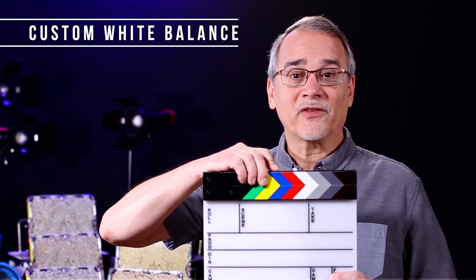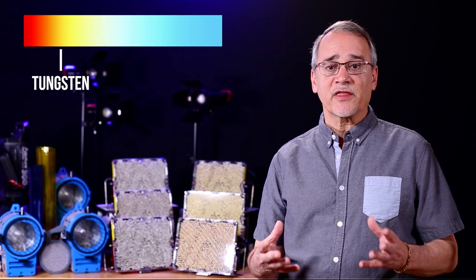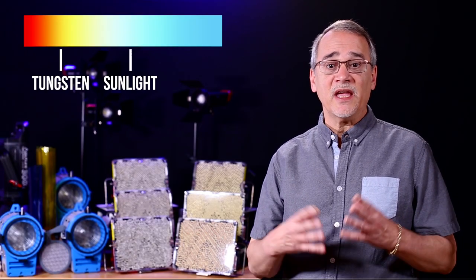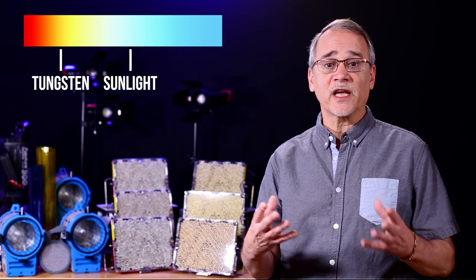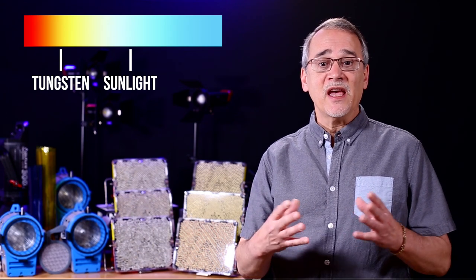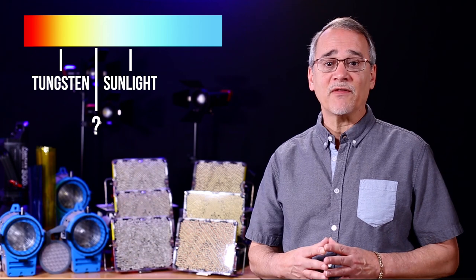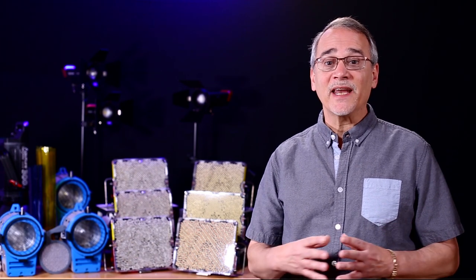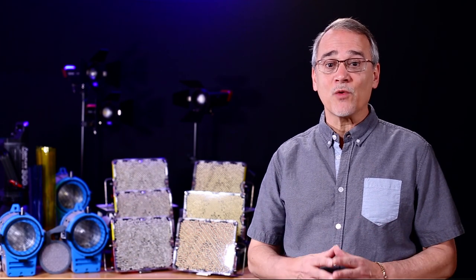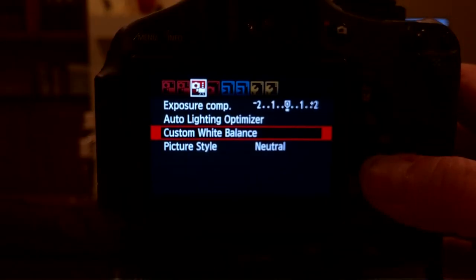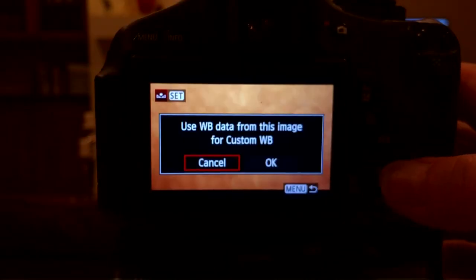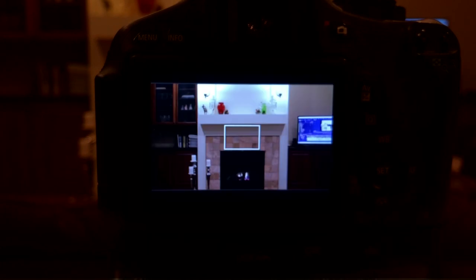Custom white balance. If your camera choices are tungsten, 3200K indoors, or sunlight, 5500K outdoors, and you are shooting in lights that are 4000K, the color will be off. This is about lighting, so I'm not going to go into why and how to set up custom white balance for your shots; however, you should look into it as this allows you to tell your camera exactly what white it should be.